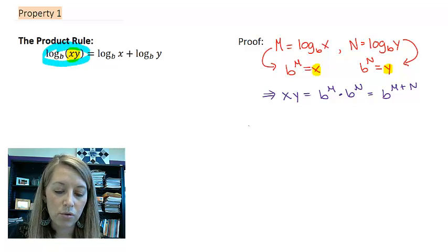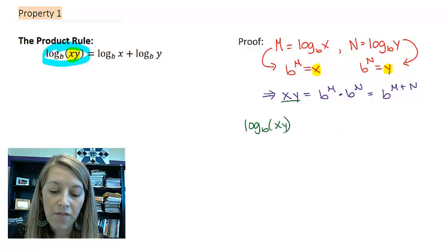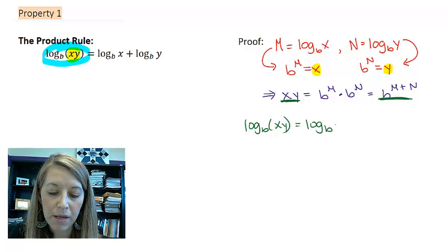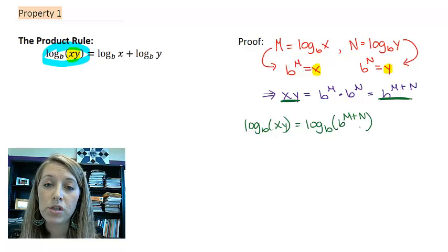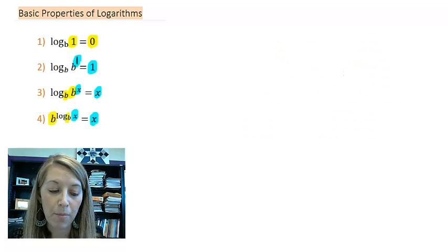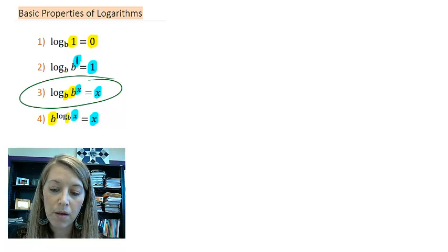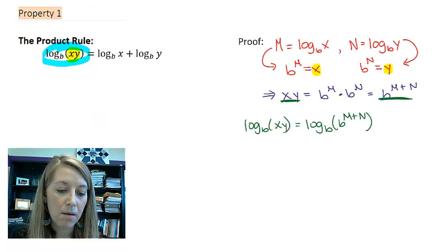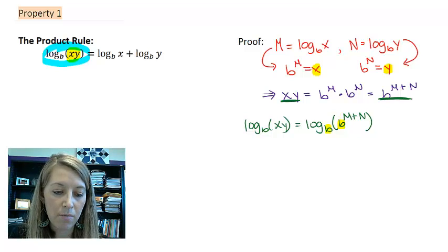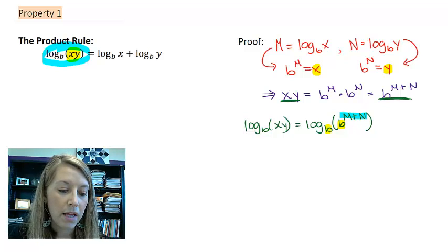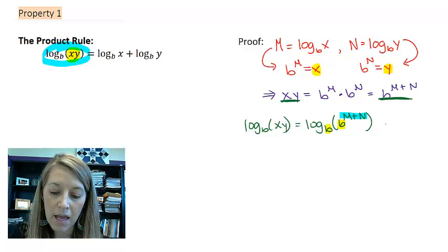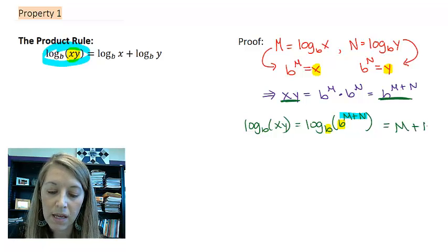Now let me look at all of this. So I'm going to take log base b of x times y. And if I make this substitution, that is equivalent to log base b of b to the m plus n. Well, we just reviewed our basic properties that said anytime my two bases match, I'm left with my exponent. So in this case, my two bases match, so I am left with my exponent. And so that means that I am left with m plus n.